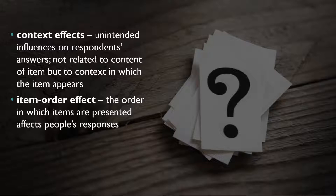Context Effects on Survey Responses. This complexity can lead to unintended influences on respondents' answers, often referred to as context effects, because they are not related to the content of the item but to the context in which the item appears. For example, there is an item order effect, when the order in which items are presented affects people's responses. One item can change how participants interpret a later item, or change the information they retrieve to respond to later items.